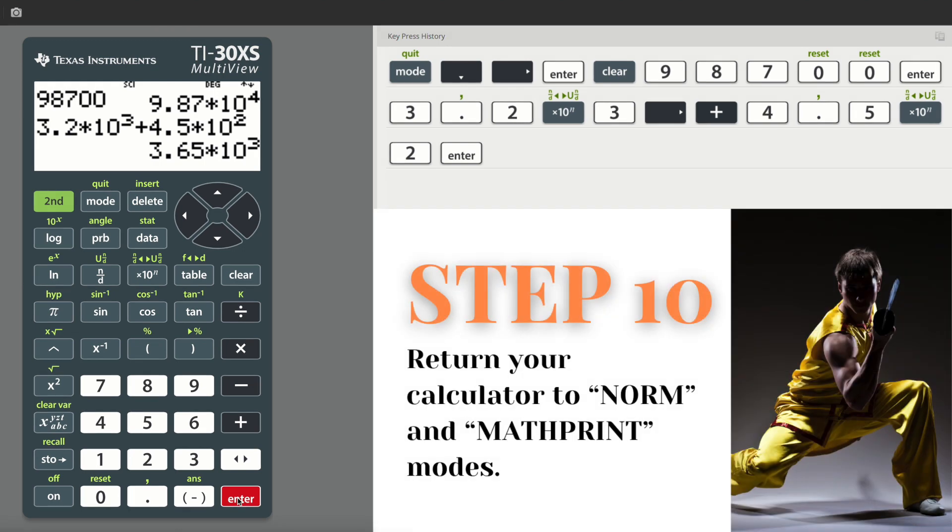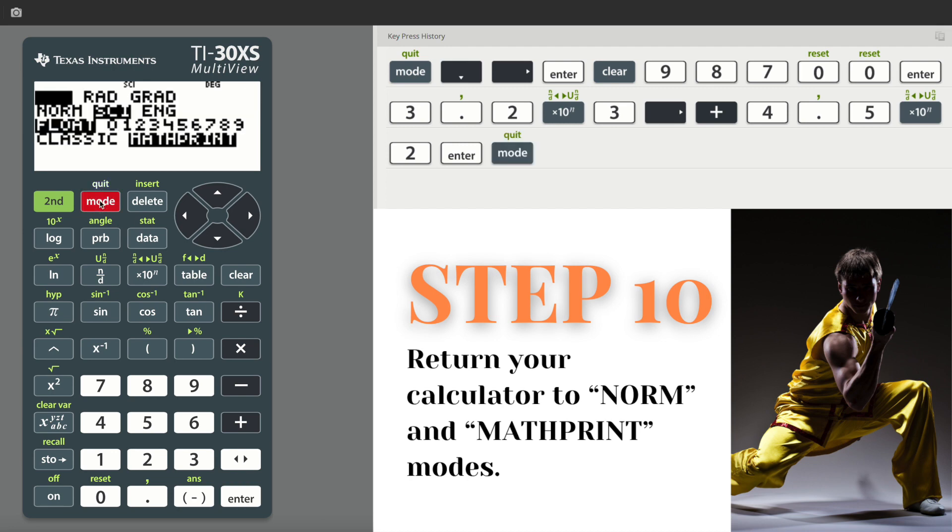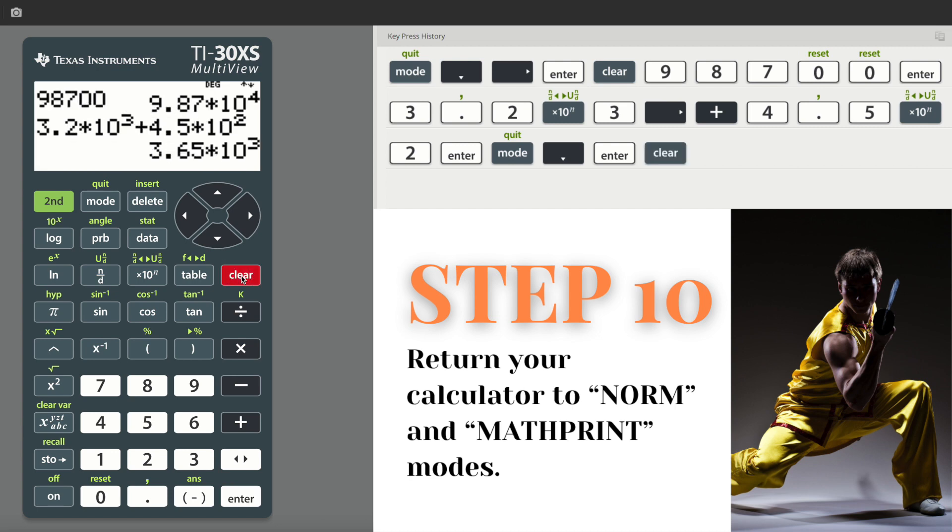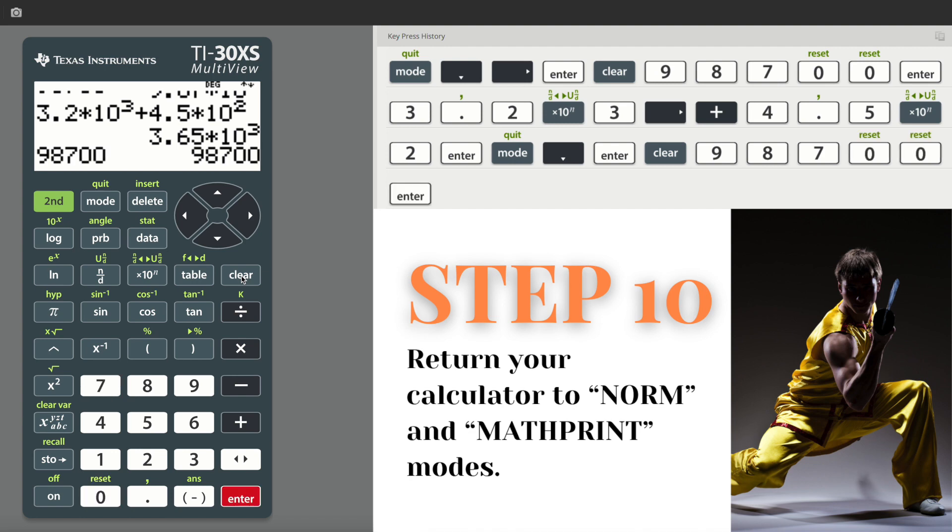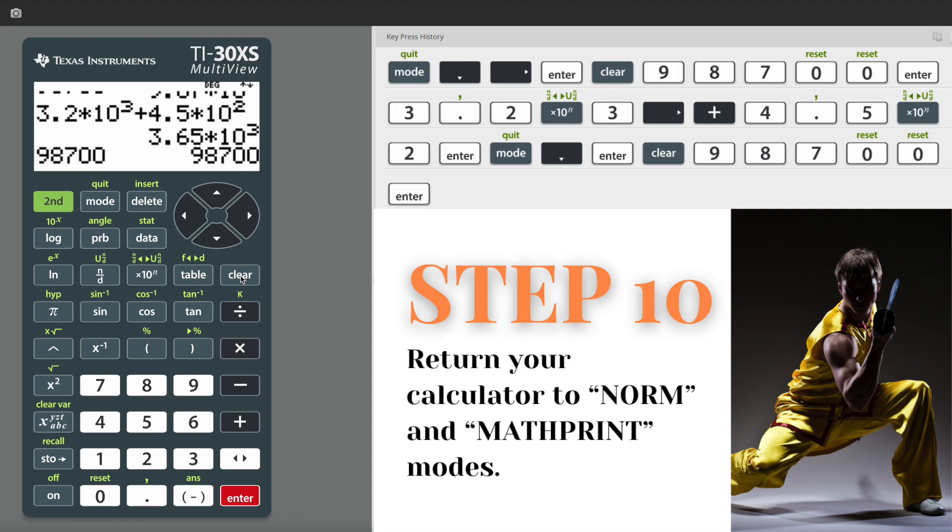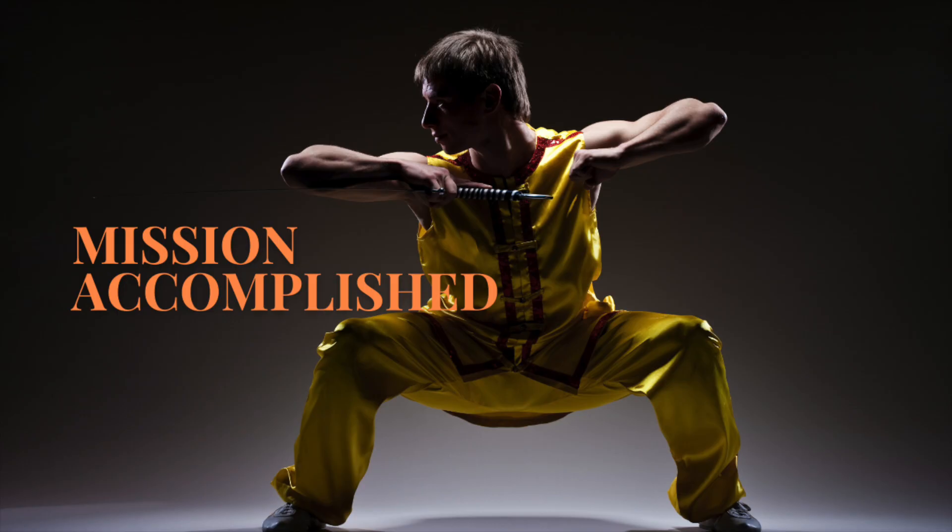make sure you turn your calculator out of scientific notation before you end or you're going to be real confused on the next problem. So let me arrow back down to norm, enter to select it, clear to get out of that screen. And now if I type in a number like 98,700, it won't give me some funky answer. It's going to return my numbers in the standard form of a number. All right.